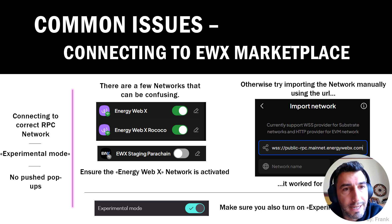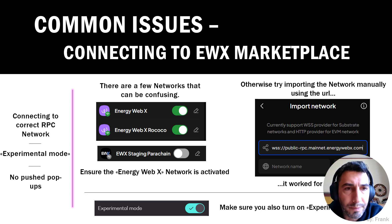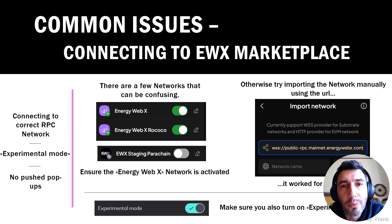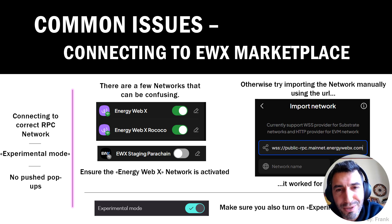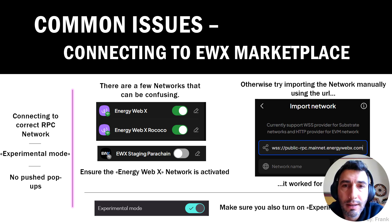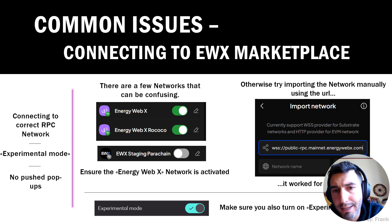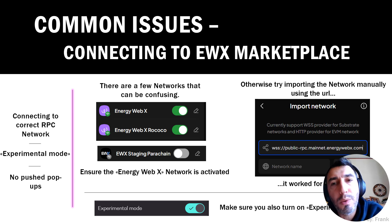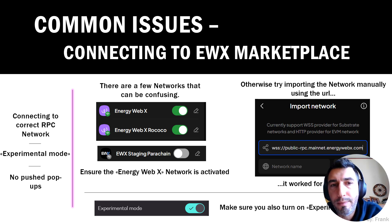You can search and there are like two to four different networks under Energy Web — that confused me initially. You can activate them all and maybe it still doesn't work. If that's the case, you will need to import the network using the URL. You can copy the one I have here, or get it from the official Telegrams and Discords where the admins have it pinned. Copy that URL, import the network, give it a few seconds, and it will fill out all the tabs below. Then go back into the app, try reconnecting, and for the majority of people that has worked.